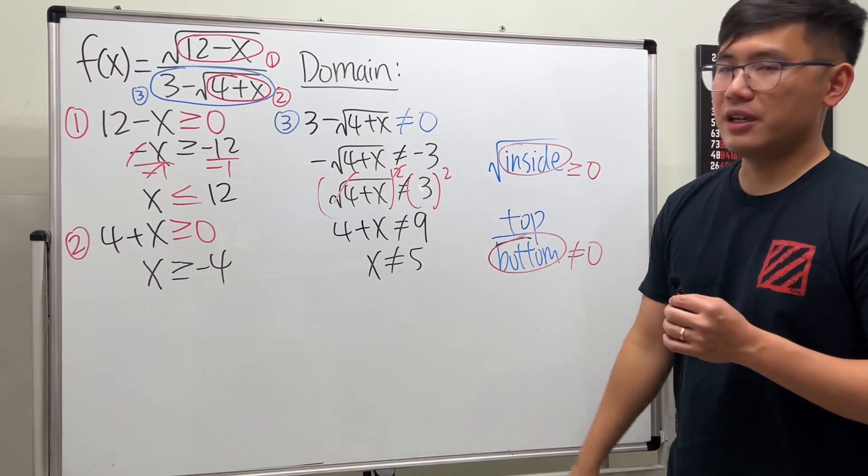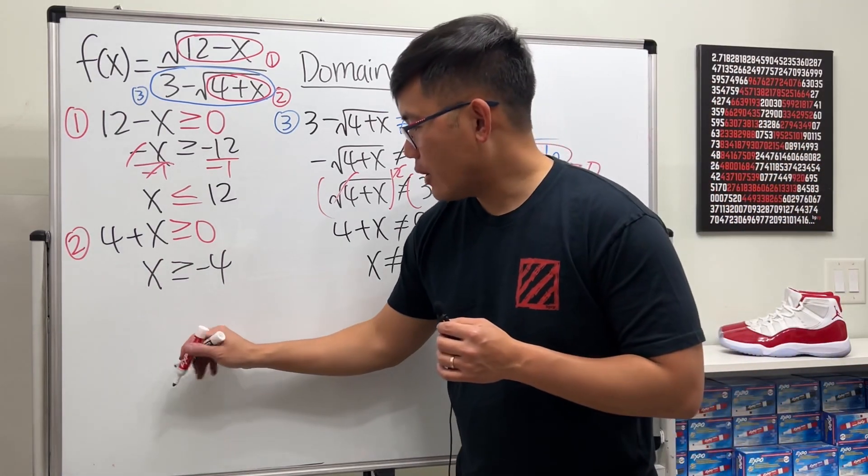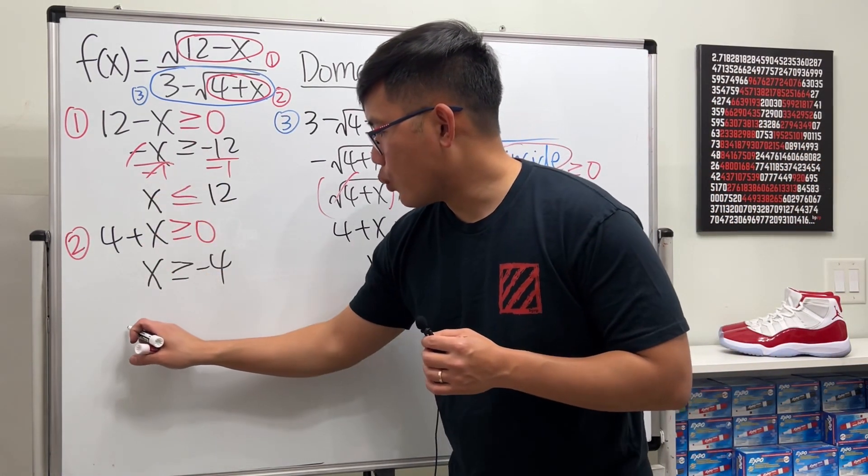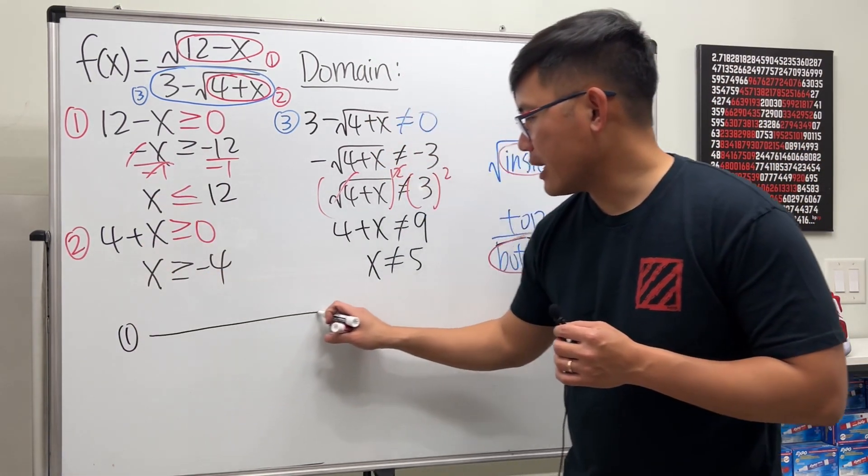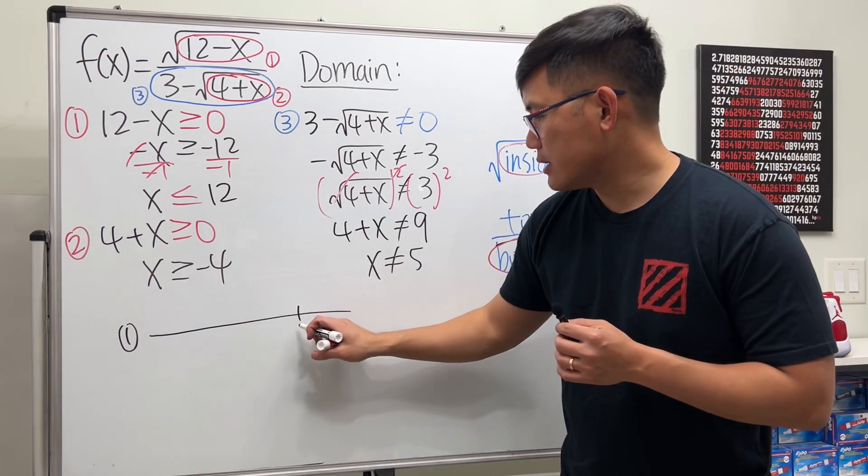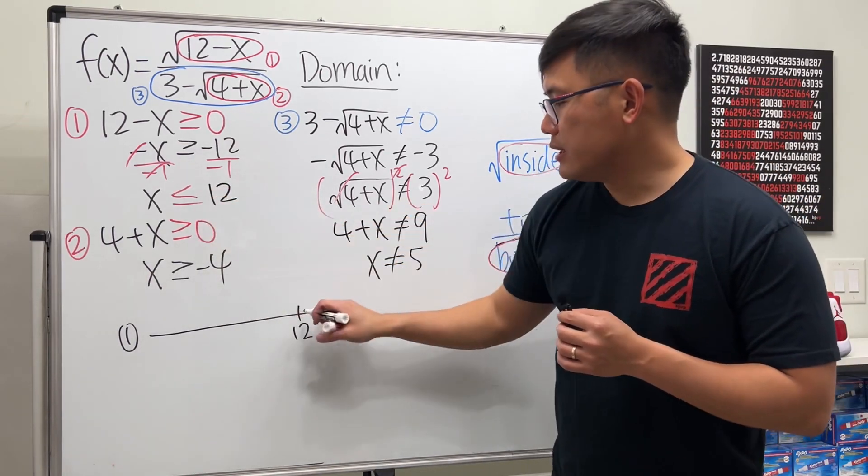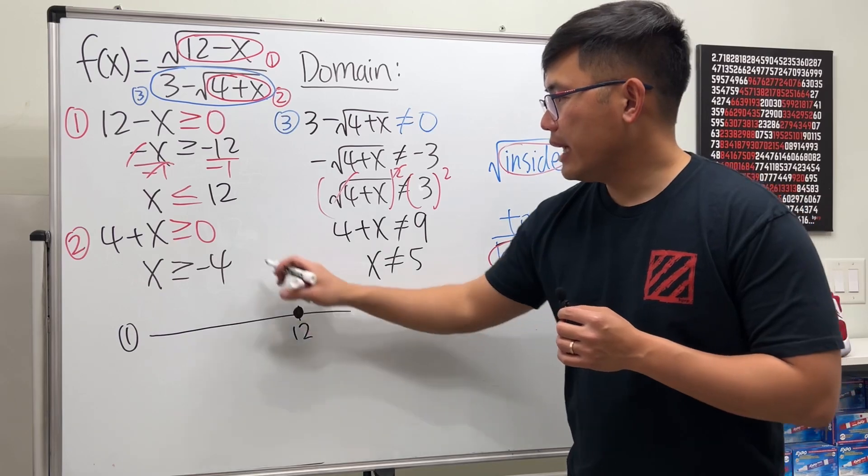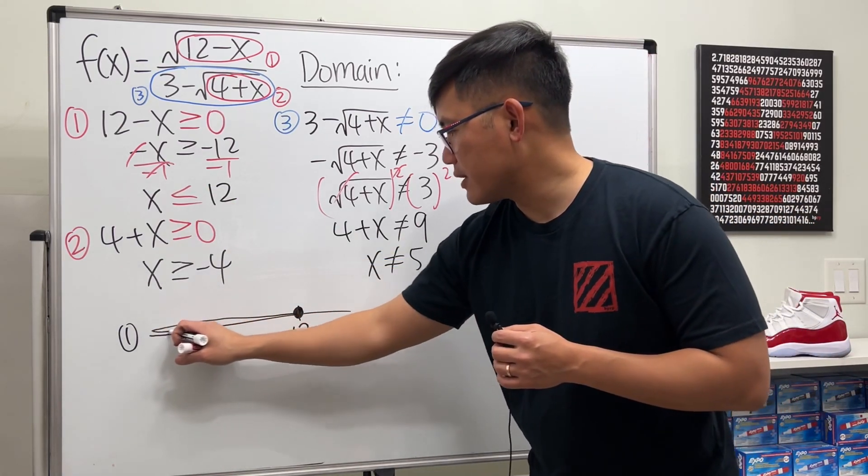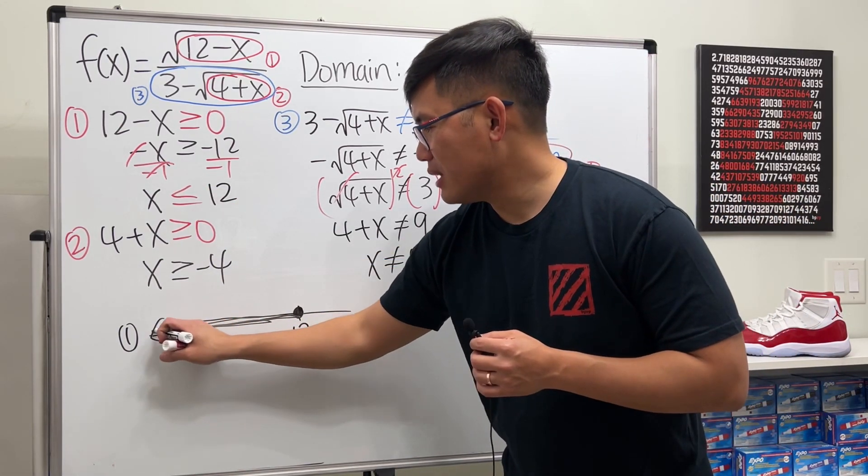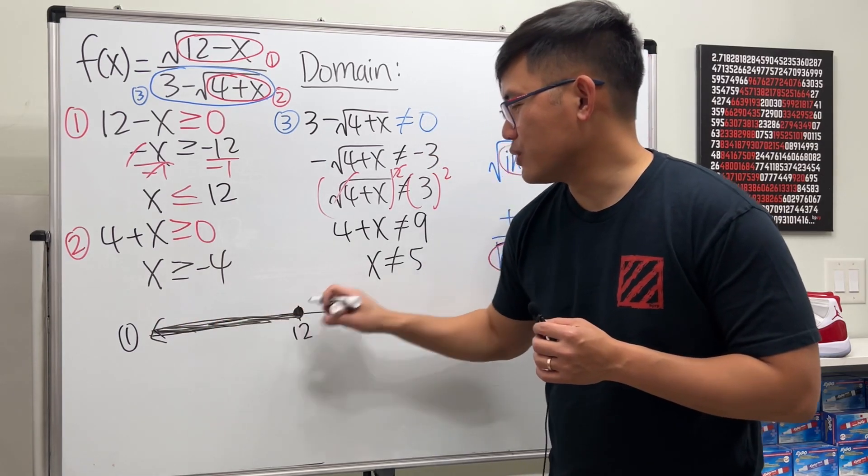Okay, we have all these three conditions. Now we just have to put them together. This is how I like to do it. From condition one, let's draw a number line. Here is 12, it's right here. It's inclusive so closed circle, and it's less than so we go to the left like this. Use a number line, it's much better for us to visualize.